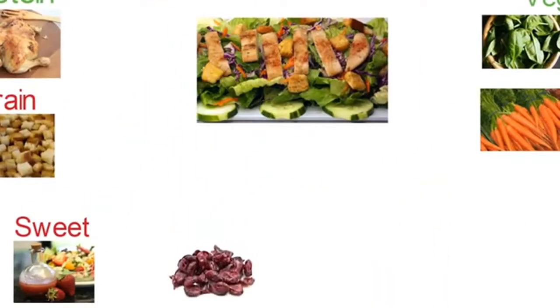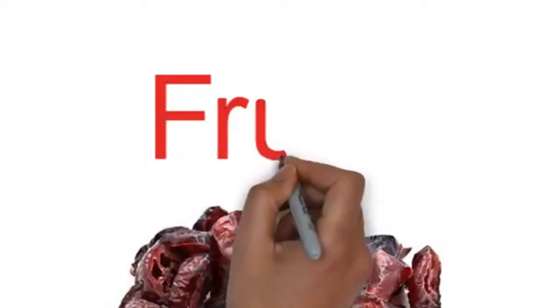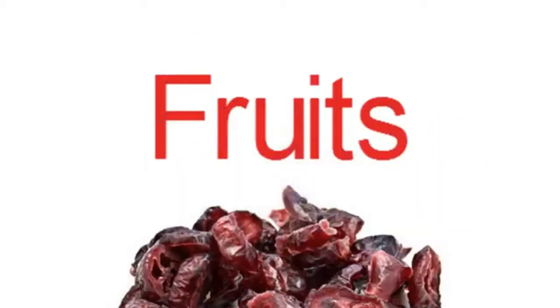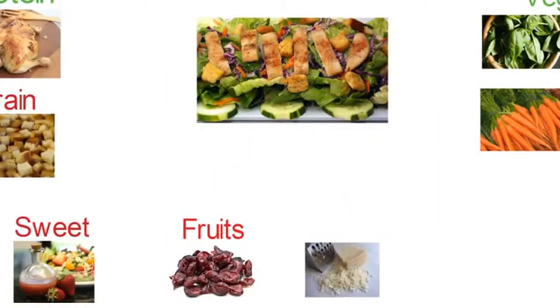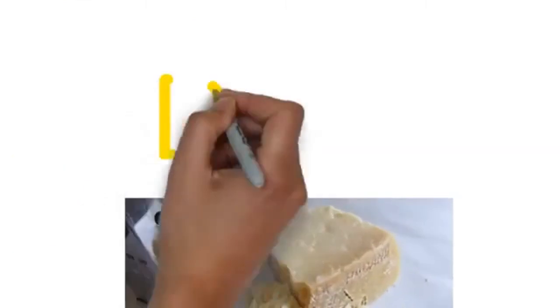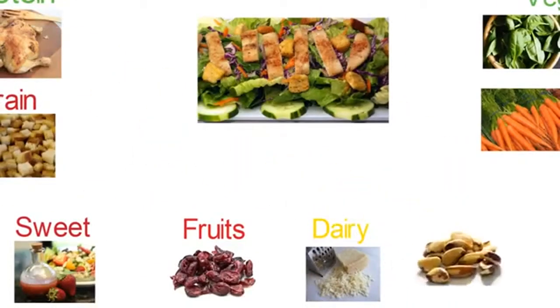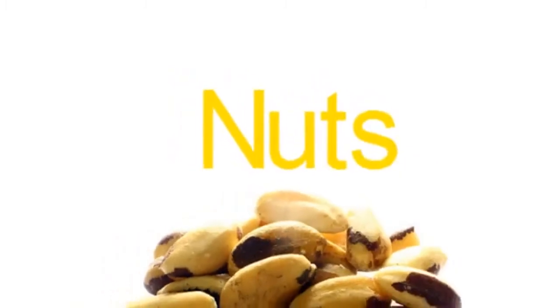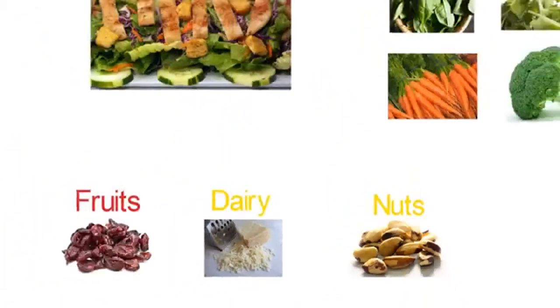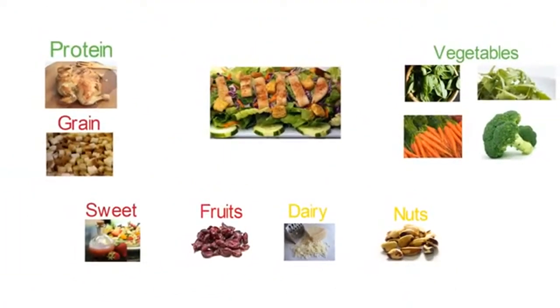The dressing — a raspberry dressing — is sweet, so that belongs in the sweet category. You also see dried cranberries, which count as fruit. There's cheese, which is dairy. And if they sprinkle some nuts on there, that goes in the nuts category.